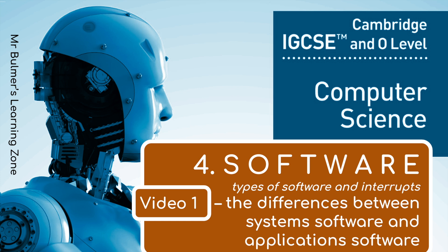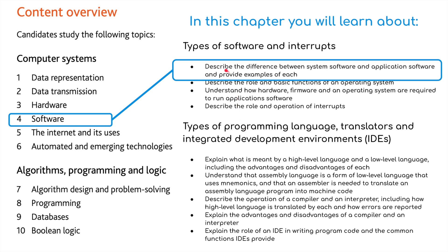This is the first video for Topic 4, Software, from the new IGCSE Computer Science Syllabus 2023-2025. We're going to be looking at the differences between system software and application software, and be able to describe the difference between them and provide examples of each.